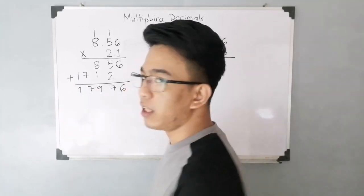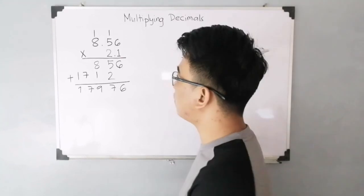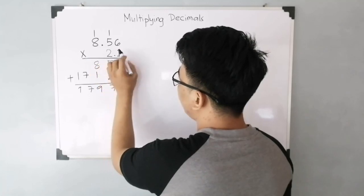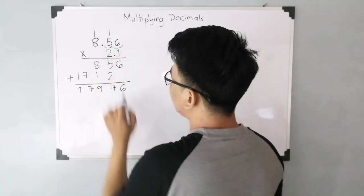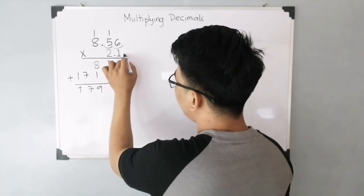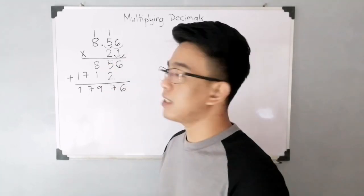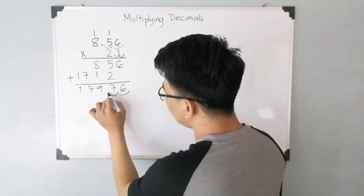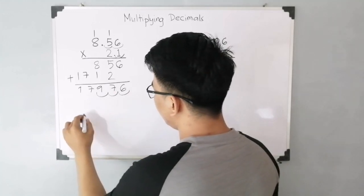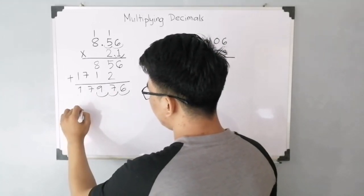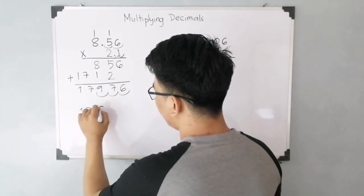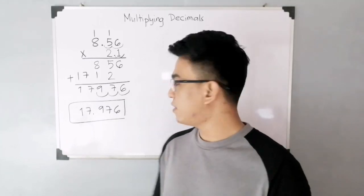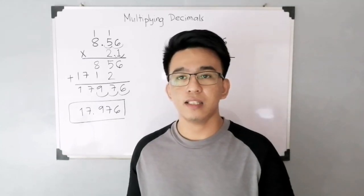And lastly, to get our final product, you need to count the number of decimal places in our given decimals. So, for the first decimal, you have 1 and 2 decimal places. You have 2. And then, in our second decimal, we have 1 decimal place. So, all in all, we have 3 decimal places. So, let us count 1, 2, and 3. Therefore, the product of those decimals is simply 17.976. This is the correct answer for item number 3. We have 17.976.